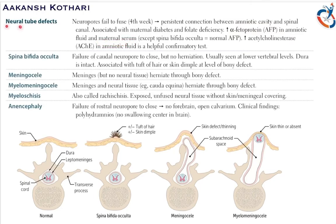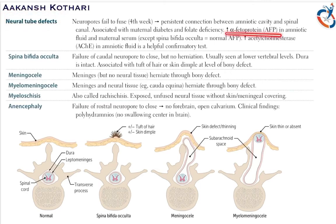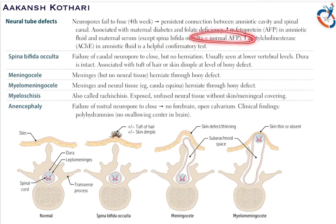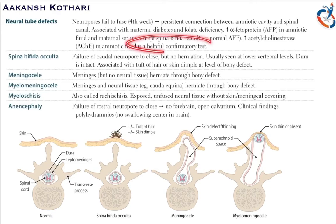If a fetus has neural tube defects, there will be a major increase in alpha-fetoprotein levels in the amniotic fluid and maternal serum — except in spina bifida occulta, where alpha-fetoprotein levels are normal. There is also an increase in acetylcholinesterase levels in the amniotic fluid, which is a helpful confirmatory test.